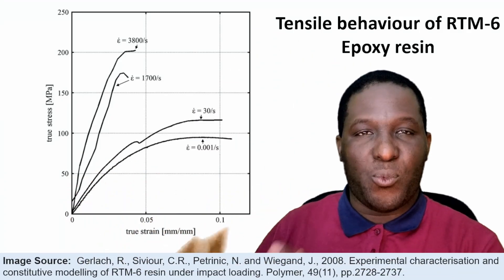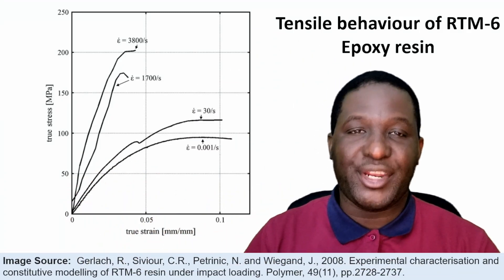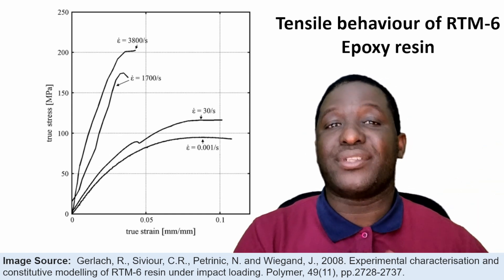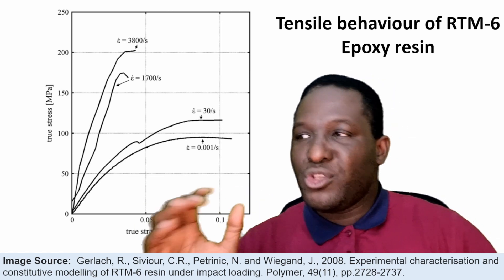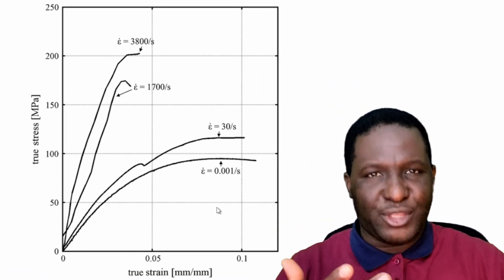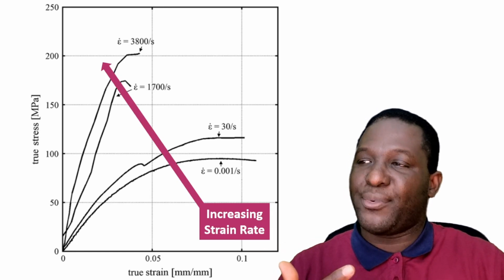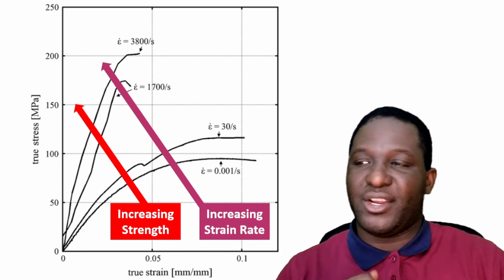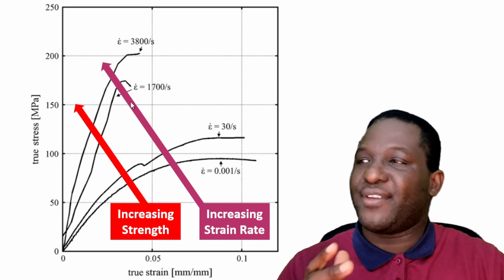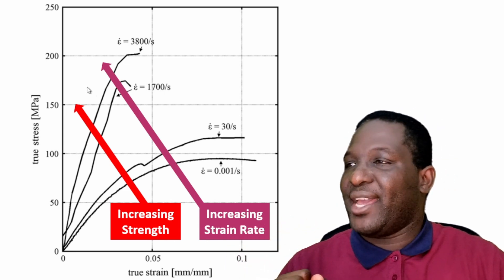The challenge is when you want to investigate high-rate behaviour. Consider this particular work, probably by Galak, Sivio, and Petronik, looking at the tensile behaviour of a grade of epoxy resin used in composite design called RTM6. What you see here is the true stress-strain response, and you instantly note that with increasing strain rate, the strength of the material also increases. For example, at a low strain rate it's just under 100 MPa, at a strain rate of 80 it's around 125 MPa, and at a strain rate of 1700 it's around 175 MPa.